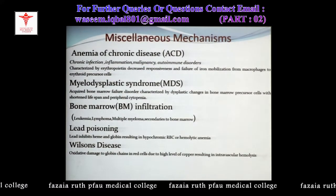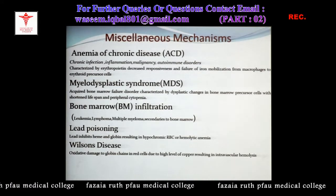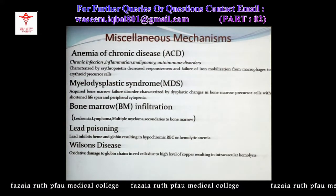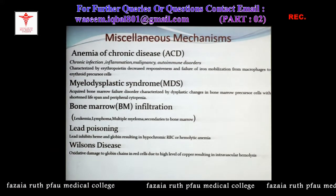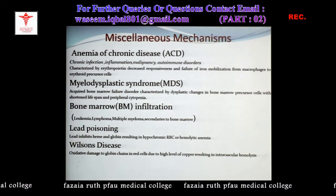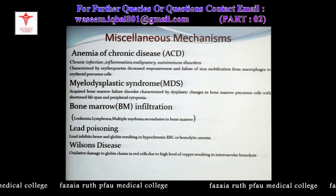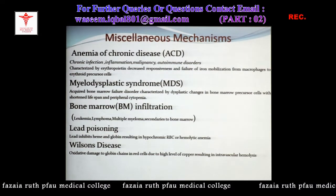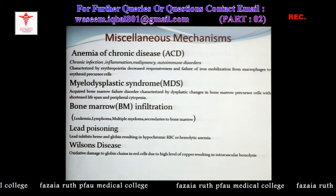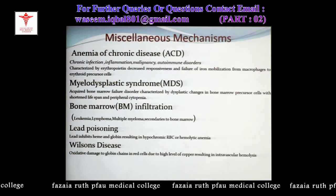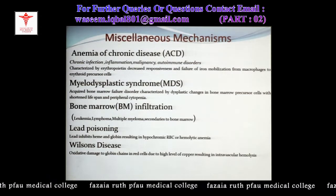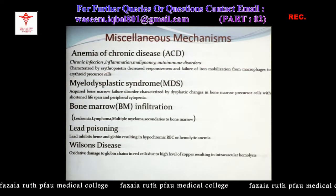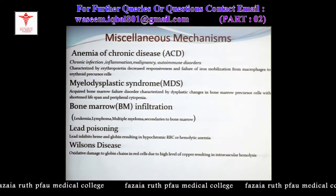Anemia of chronic disease — the underlying mechanisms include chronic infections, inflammation, malignancy, and autoimmune disorders like rheumatoid arthritis. Erythropoietin is decreased and the marrow cells are unresponsive to it. Very importantly, there is failure of mobilization of iron from macrophages to developing erythroid precursors, so iron is not available for hemoglobin synthesis.